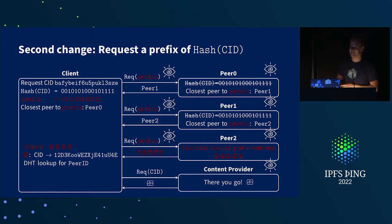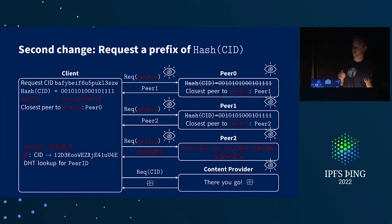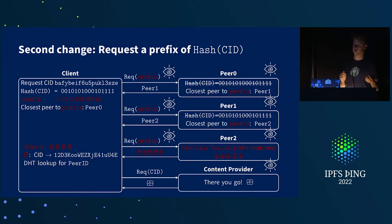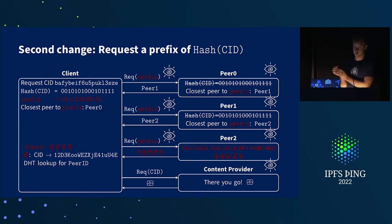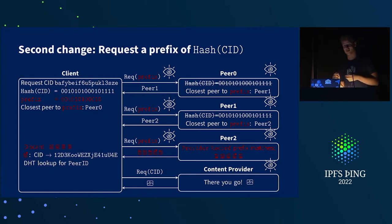The client takes the prefix of the hash of the CID, computes the closest peer to either the prefix or the hash of the CID itself — it doesn't really matter — and then requests that prefix.